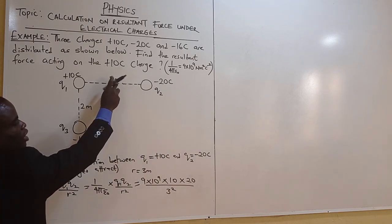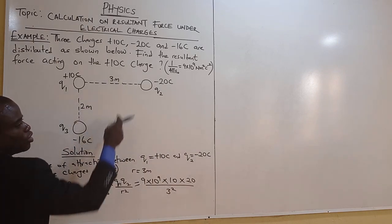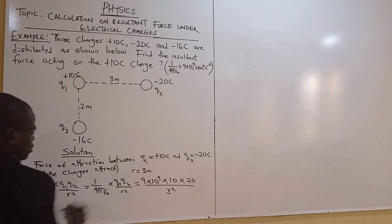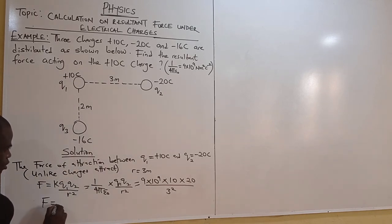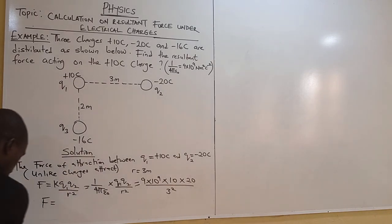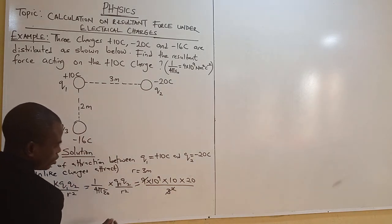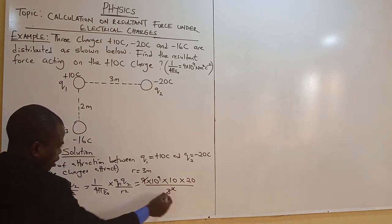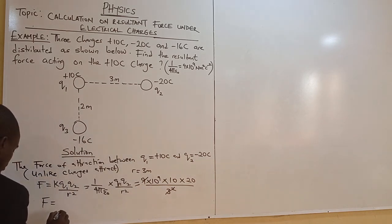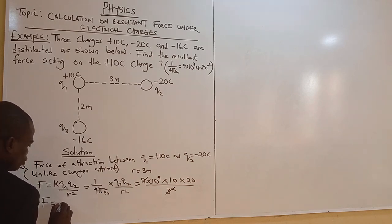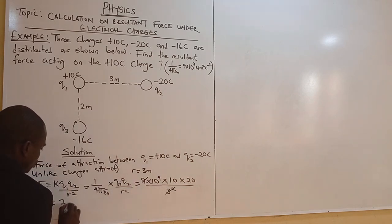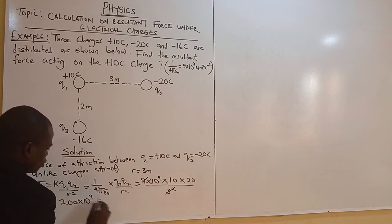Since you have standard units of Newton, meter, and coulomb — if you are given distance in centimeters, convert to meters by dividing by 100. Now, when you multiply the numerator, 3 squared is 9, and 9 divided by 9 cancels out. So f1 equals 200 times 10 to the power 9.